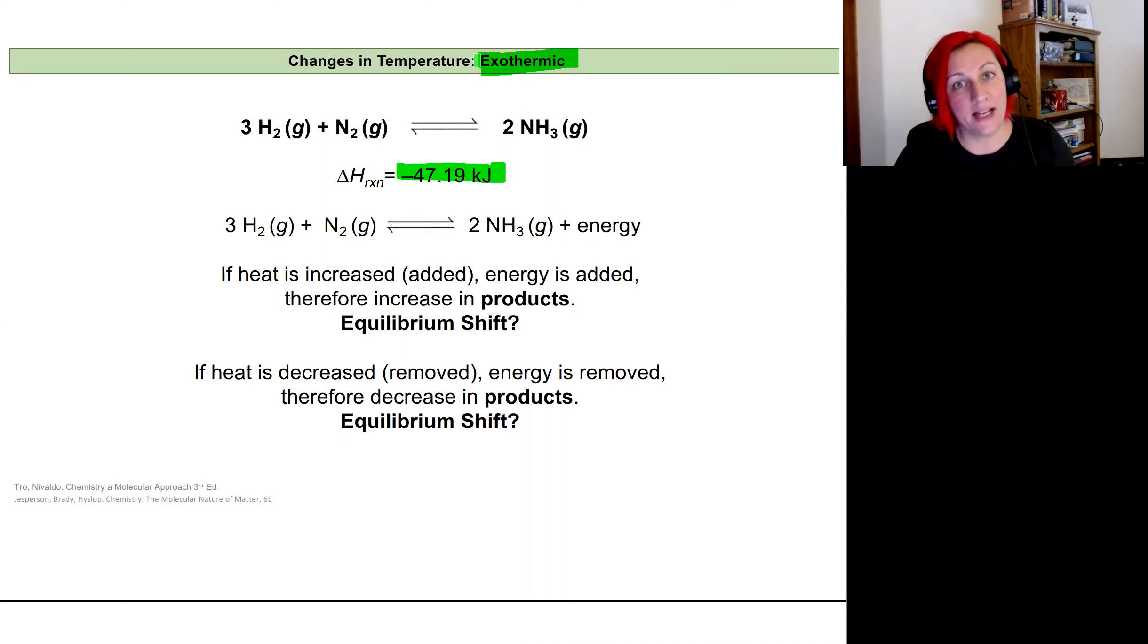So an exothermic reaction releases energy into its surroundings. So another way to think about this is that energy is a product. If you take your reactants at its higher energy and form the more stable products, you have excess energy that's leftover that's released. And so the way I find this easiest to follow is to think of that energy as a product, that heat is a product.